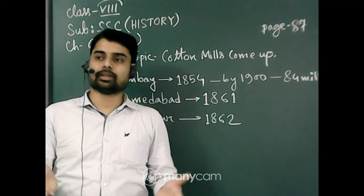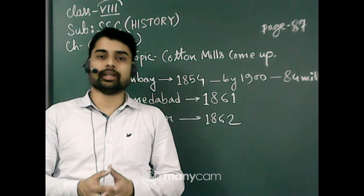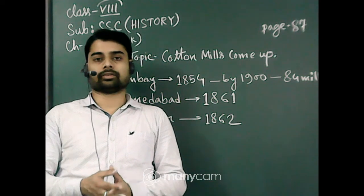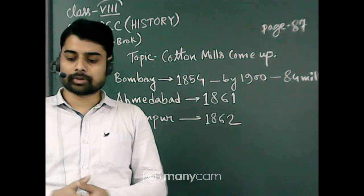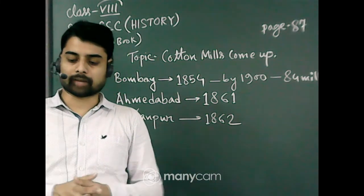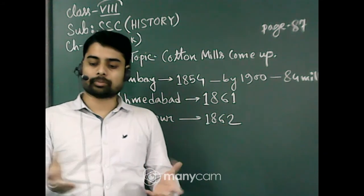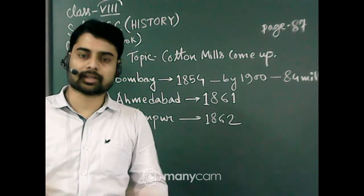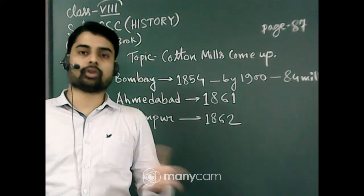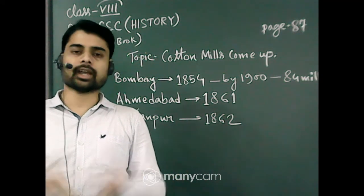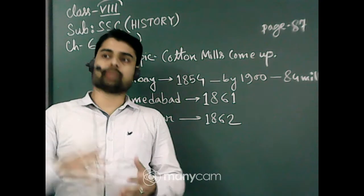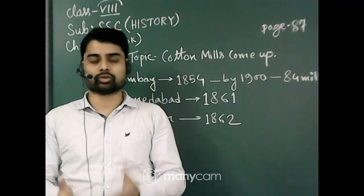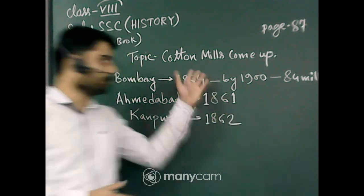It was easy to collect raw material for the industry, and water was available. By 1900, a lot of businessmen like the Parsis and Gujarati businessmen came with money that they earned from China trade, and they invested this money in cotton mills in Bombay.